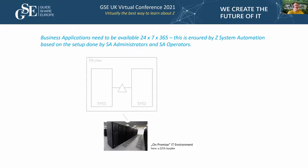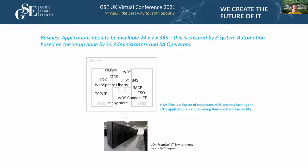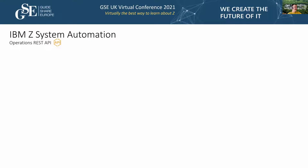System Automation runs normally in what we call an SA-plex — a cluster of Z systems also called a sysplex. Here you see a cluster of two systems: if one system fails to operate some software, System Automation detects that and takes corrective action by moving to another system. All applications hosted on z/OS and managed by System Automation are configured in a policy by an SA admin.